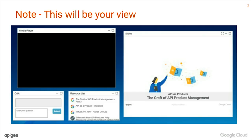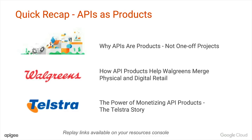If you have any questions, feel free to post them at any time in the Q&A console, and we will ensure that we try and address most of them, time permitting, during the Q&A session. In the last few webcasts, we spoke about the increasing importance of APIs in the enterprise digital landscape and why many companies are now treating APIs as products and not one-off projects. We heard from the likes of Walgreens and Telstra on how managing APIs as products has helped them completely transform their business by creating innovative experiences for their customers.